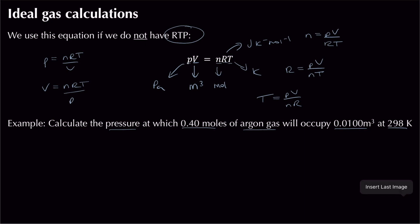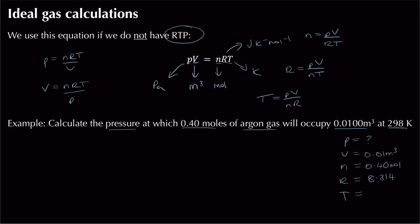Writing out PV = nRT with values alongside: pressure is unknown, volume = 0.01 m³, n = 0.40 mol, R = 8.314 J K⁻¹ mol⁻¹, and temperature = 298 K. No unit conversions are needed here, so we move straight to rearranging.